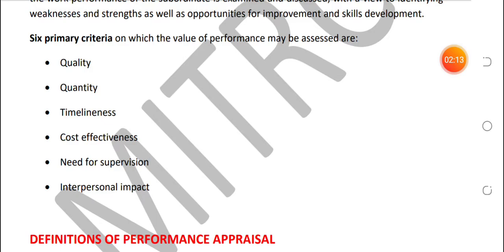Quality ka matlab kya hai — organization ne jo products output bola tha ya jo us subordinate ko work diya tha, usne efficiency aur effectiveness ke saath complete kiya ya nahi kiya. Agar kiya to quality performance hai, performance acchi hogi; nahi kiya to performance acchi nahi hogi.